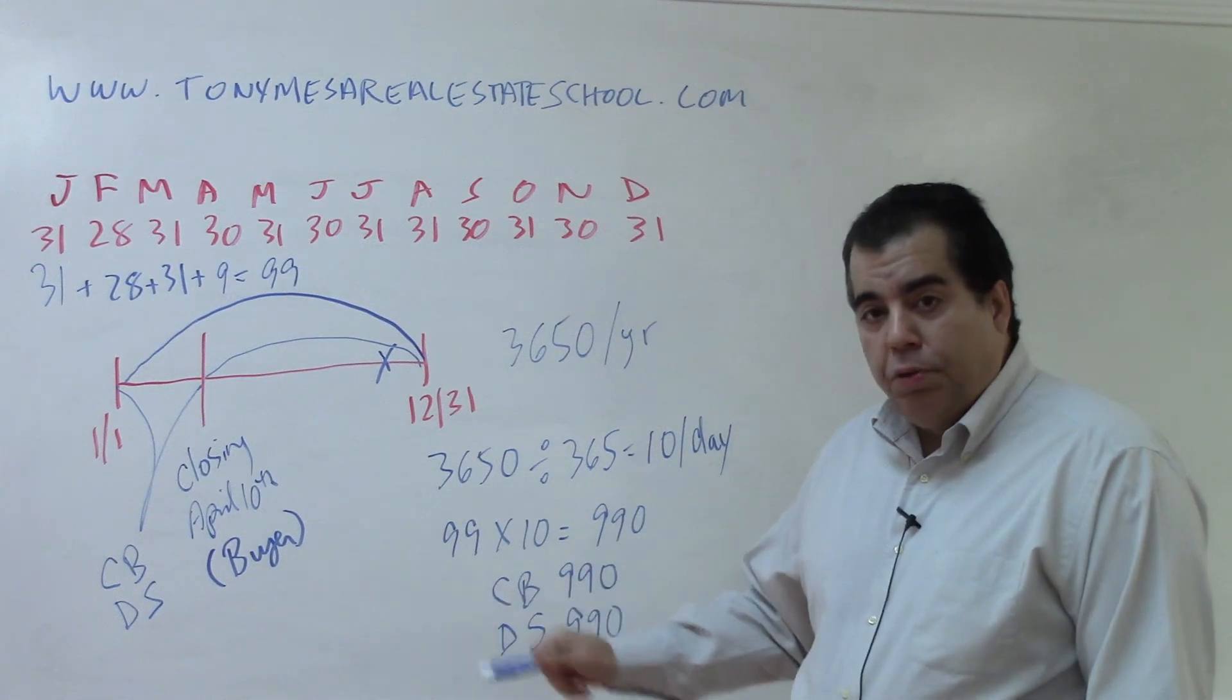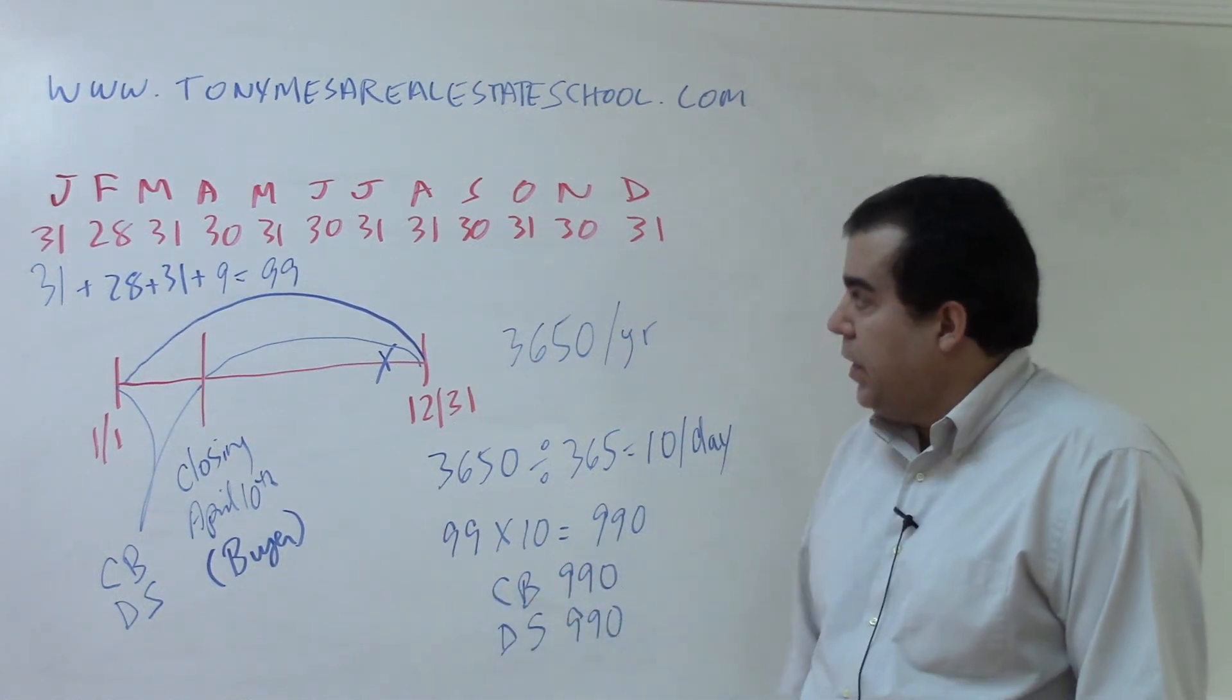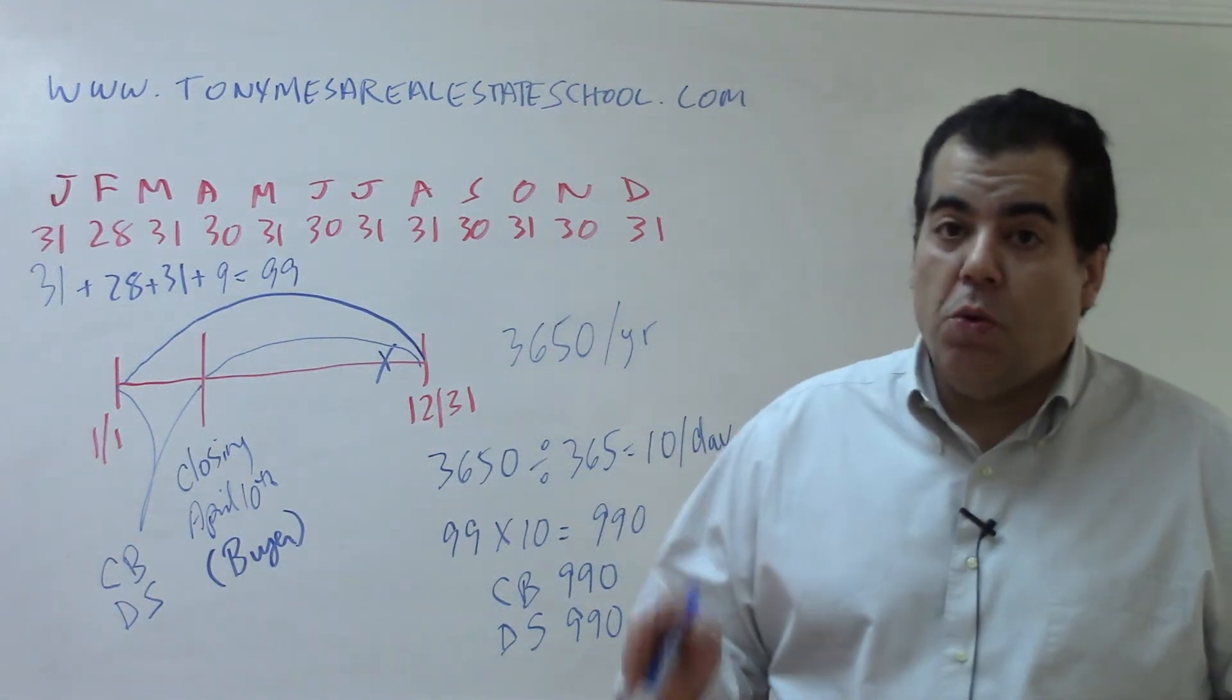Whenever you have a proration, it is always a credit to one side and a debit to the other side, and it is always the same number.